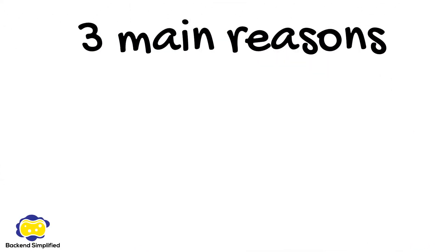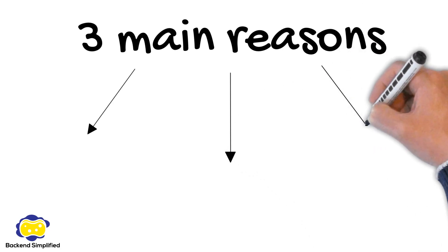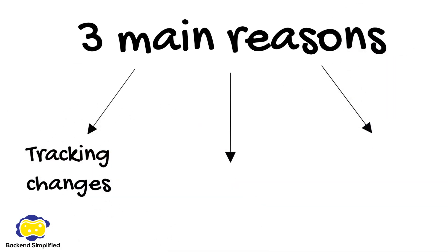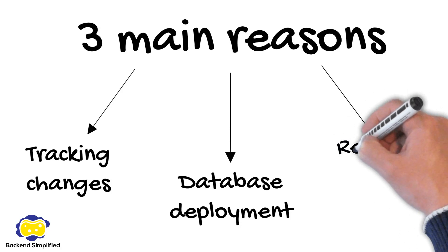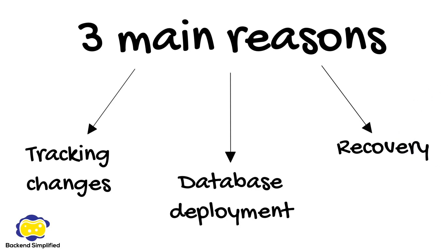There are three main reasons why database migrations are essential. First, versioning and tracking changes: migrations allow you to keep track of changes to your database schema by creating a history of modifications. Second, database deployment: when deploying your application to different environments such as development, staging, and production, migrations ensure the database schema is always up-to-date without any manual intervention. Third, rollbacks and recovery: in case of errors or a need to revert to a previous state, migrations provide a structured way to undo changes and recover data.